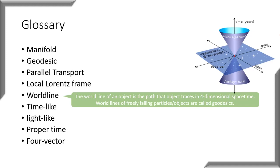Another term I would like to introduce is a world line. A world line of an object is the path that the object traces in four-dimensional space — that is, the trajectory of the object. The world line of a freely falling object is called a geodesic. Whatever path or trajectory a body follows in four-dimensional space is called a world line. If the path is under free fall, then the world line of that object is called a geodesic.